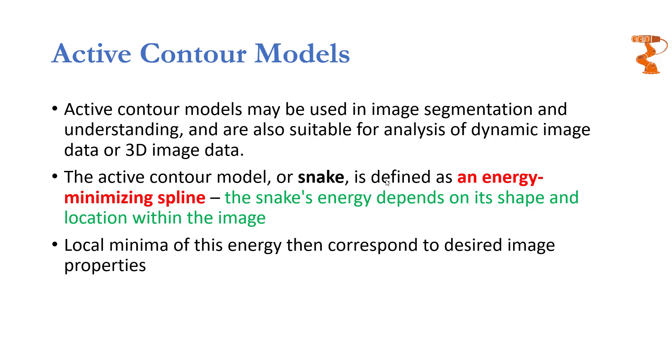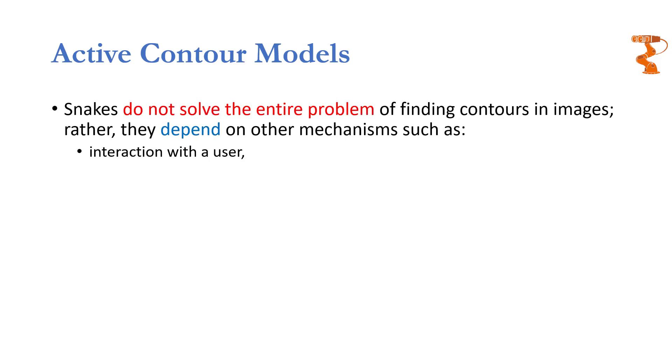Once the snake has settled somewhere that minimization will correspond to the desired image property. So these models they don't solve the entire problem of finding contours in images because they are not going to find an edge or segment out an object on their own. They require help from some other mechanisms as well.